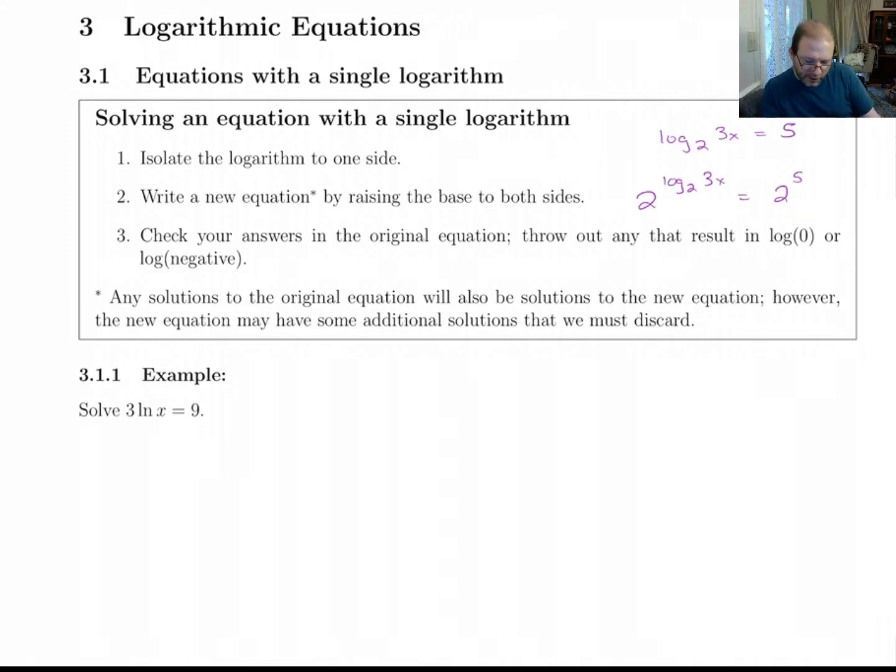Now I've got a star next to it because it says write a new equation. This new equation might have some solutions that are not solutions to the original. So any solutions you get to this new equation, you've got to check them back in the original. And really the only thing you have to check for is to make sure you don't wind up taking log of zero or log of a negative number. If you get those, you have to throw them out.